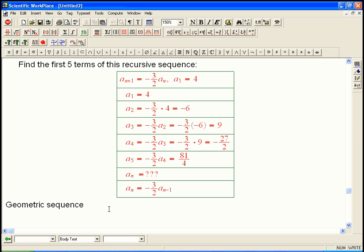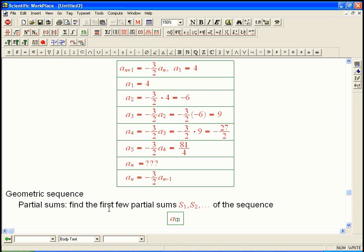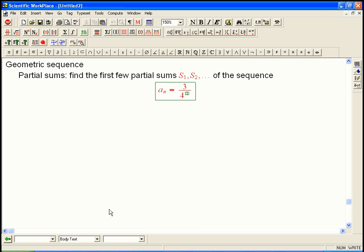And let's do a partial sum example. Let's find the first few partial sums, and those are called S sub 1, S sub 2, etc. Of the sequence, A sub n equals, let's say, let's do an interesting one, 3 over 4 to the n.